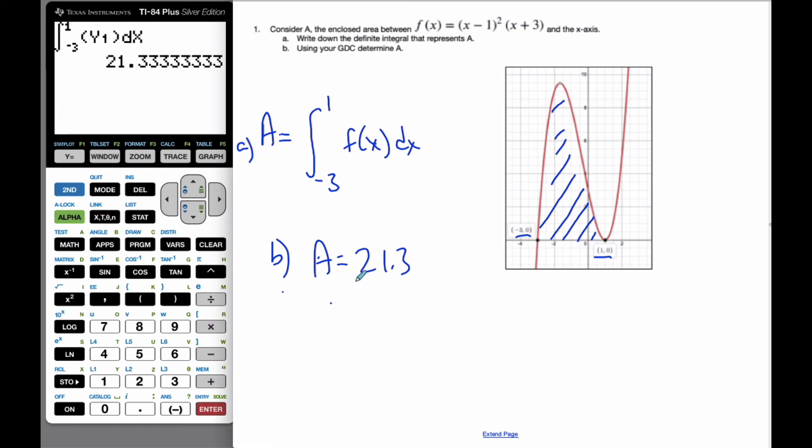And then I also see it as 21.3. So two different ways to do it on our calculator. They're quite handy that we can find the area. What the calculator actually does is it just puts in lots of little rectangles and adds them up. That's what it's actually doing.